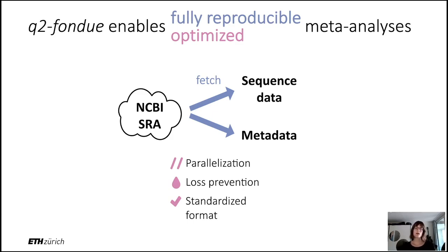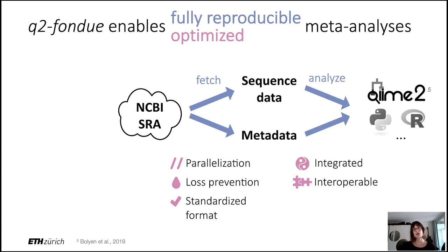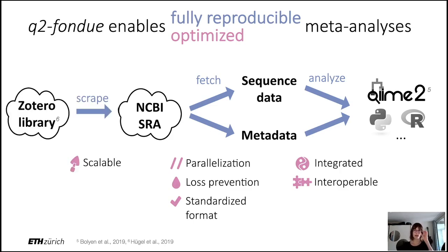Once the data download is finished, the user can choose to further analyze the datasets in any programming language of their choice or in a bioinformatics platform. The outputs are interoperable with the widely used and open source bioinformatics platform called QIIME2. If a user wanted to start the meta-analysis from a publication library, we added functionality that allows you to scrape through the publications in a Zotero library to identify the IDs of the datasets to be fetched.